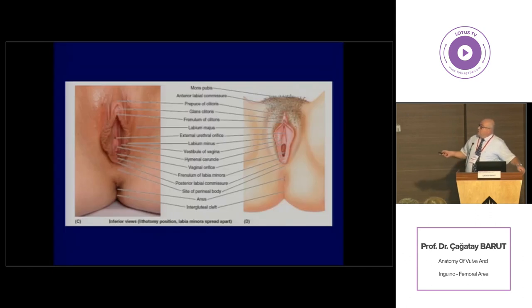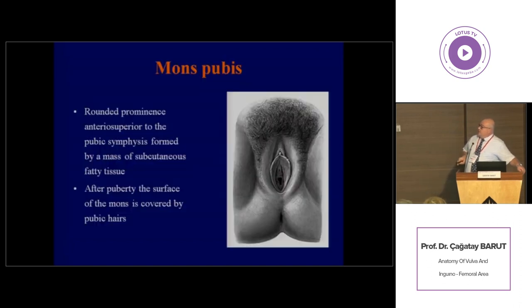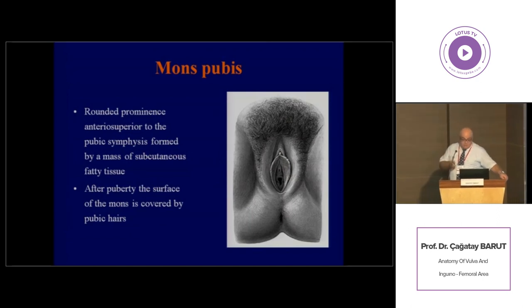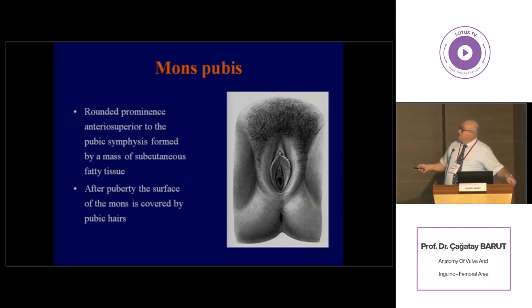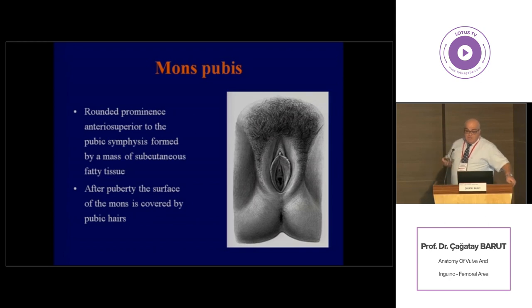Here we can see the mons pubis, the labia majora, and in between them the labia minora and all other structures. The mons pubis is a rounded prominence placed anterior to the pubic symphysis and it contains a mass of subcutaneous fat tissue.